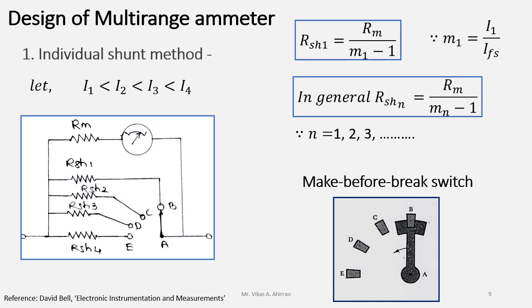In this way, during the switching, for that small finite time, both the shunts will be getting connected across the meter and thus they will prevent the meter from getting damaged due to excessive current.